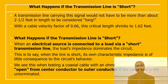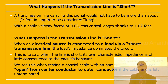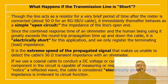When an electrical source is connected to a load through a short transmission line, the load impedance dominates the circuit, and the characteristic impedance is of little concern. Testing a coaxial cable with an ohmmeter illustrates this: the cable reads as an open circuit from the center conductor to the outer conductor if left unterminated. Though the line acts as a resistor for a very brief period after the meter is connected, it immediately behaves like a simple open circuit.